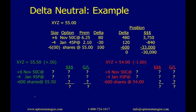Here's a concrete example of delta neutral. We have a stock at $55. The position is: long 6 November 50 calls at 625 with a delta of 80; short 4 Jan 45 puts at 210 with a delta of minus 30; and short 600 shares at $55. The delta calculation: (6 × 80) + (−4 × −30) + (−600) = 480 + 120 − 600 = zero. Delta neutral. The dollar value of this position is a credit of $30,090.